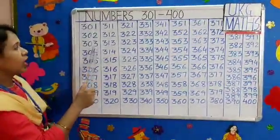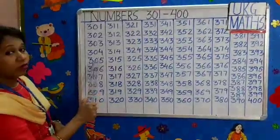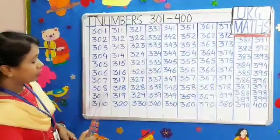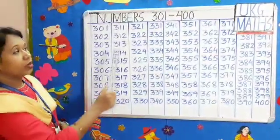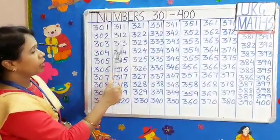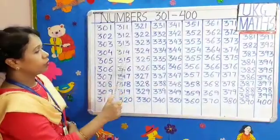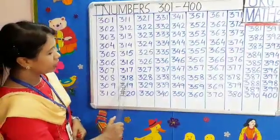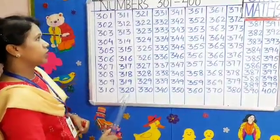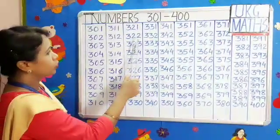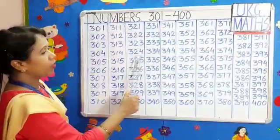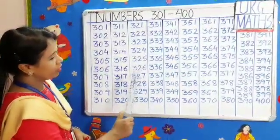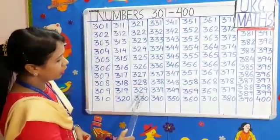The teacher counts from 302 to 330: 302, 303, 304, 305, 306, 307, 308, 309, 310, 311, 312, 313, 314, 315, 316, 317, 318, 319, 320, 321, 322, 323, 324, 325, 326, 327, 328, 329, 330.